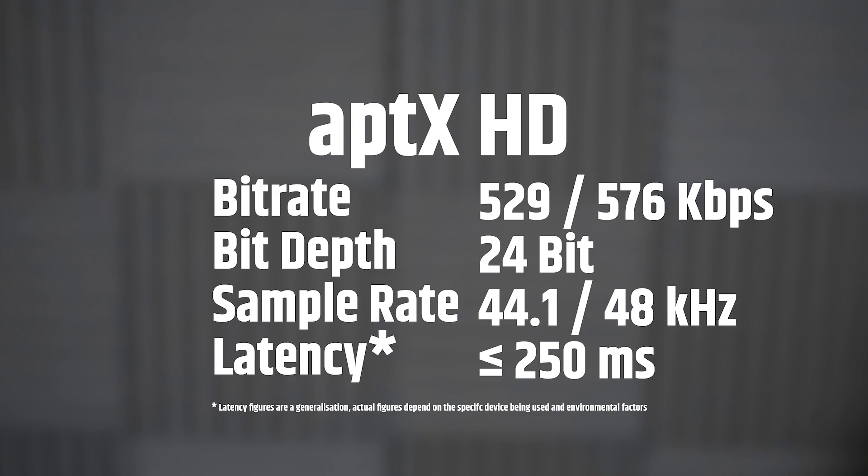Next up, we have AptX HD, which is basically an extension of AptX — the top quality version, also not available on iOS. AptX HD uses a fixed data rate of 576 kbps, a 24-bit depth, and a 48 kHz sample rate for superior audio quality. Latency is usually a little bit higher than vanilla AptX, perhaps similar to SBC depending on your device. I also want to mention AptX LL, or AptX Low Latency, which offers a lower latency experience — often less than 40 milliseconds — but at the expense of some audio fidelity. AptX LL is not widely adopted, but worth looking out for if you do gaming or movie watching via Bluetooth.